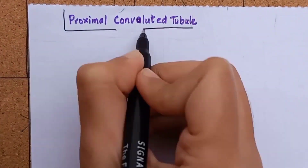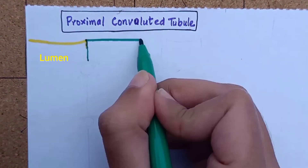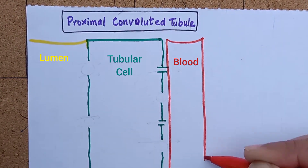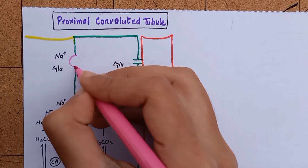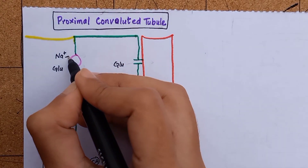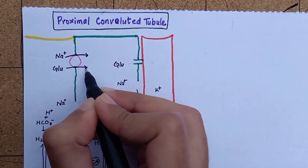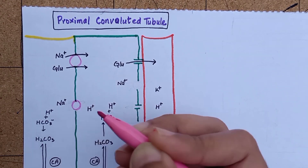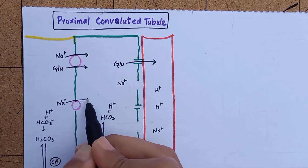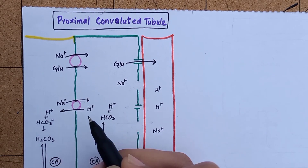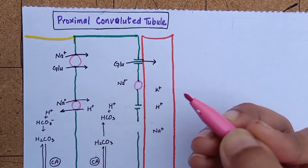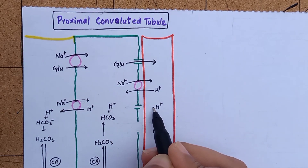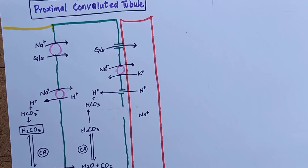In the diagram of the proximal convoluted tubule, yellow represents the tubular lumen where urine is being formed, green is the tubular cell, and red is blood. In the proximal tubule, a co-transport mechanism transports a large fraction of sodium ions across the luminal membrane with other nutrients such as glucose and amino acids, which are reabsorbed by their own channels. There is also a counter-transport mechanism that reabsorbs sodium while secreting hydrogen ion into the lumen. This sodium is then reabsorbed in exchange for potassium via the sodium-potassium ATPase pump on the basal membrane.